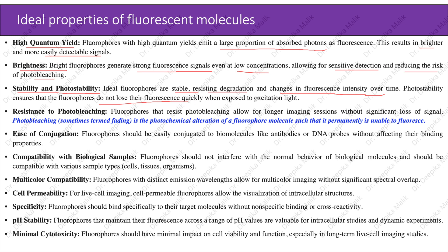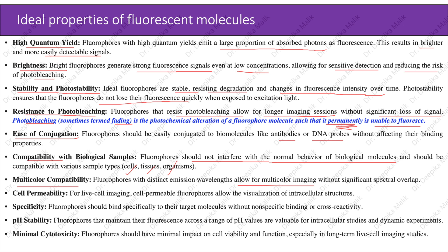Ideal fluorophores are stable, resisting degradation and changes in fluorescence intensity over time. Photostability ensures that the fluorophores do not lose their fluorescence quickly when exposed to excitation light. Resistance to photobleaching allows for longer imaging sessions without significant loss of signal. Photobleaching, sometimes referred to as fading, is a photochemical alteration of a fluorophore molecule such that it permanently loses the ability to fluoresce. Ease of conjugation is also important — fluorophores should be easily conjugated to biomolecules like antibodies or DNA probes. Multicolor compatibility: fluorophores with distinct emission wavelengths allow for multicolor imaging without significant spectral overlap.